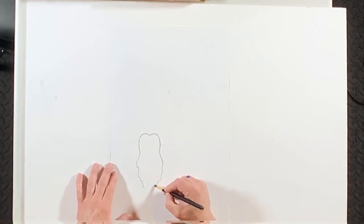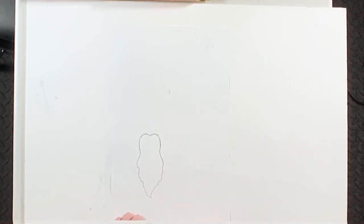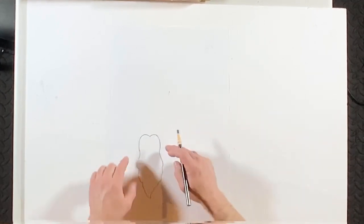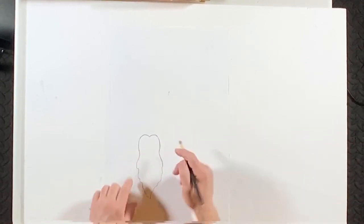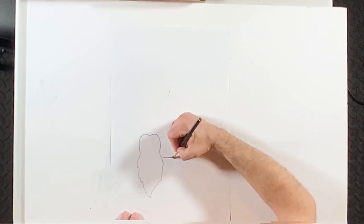So you just keep coming down like you're drawing a beard. And there you have it, our mermaid's hair. And now, right where the hair turns in and starts going out is where we're going to put our arms.